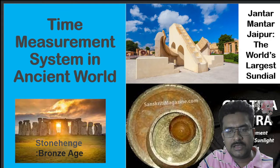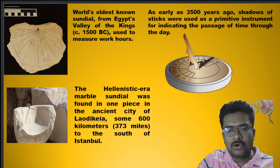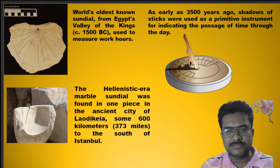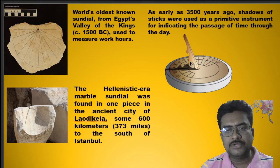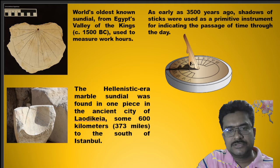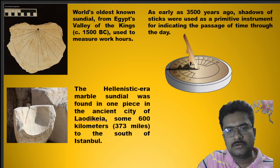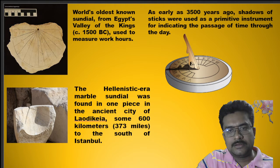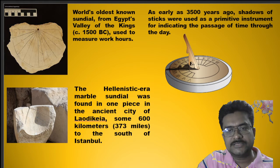A sundial is basically a horological device which tells the time when direct sunlight shines, due to the apparent position of the Sun in the sky. In the narrower sense of the word, it consists of a dial and a gnomon which casts the shadow of sunlight on a dial. The shadow of the gnomon makes a line with the hour line which gives the time of the day.